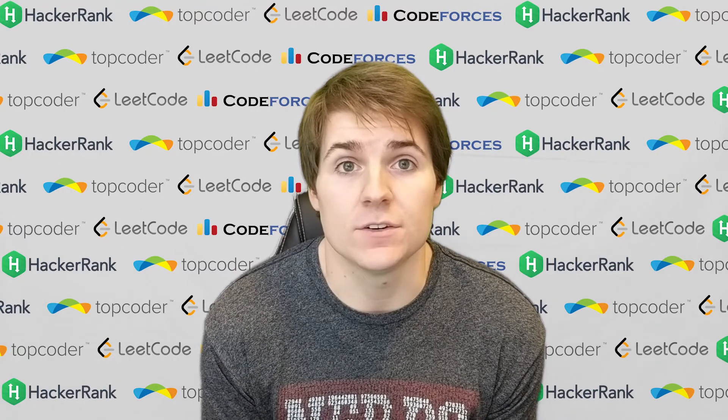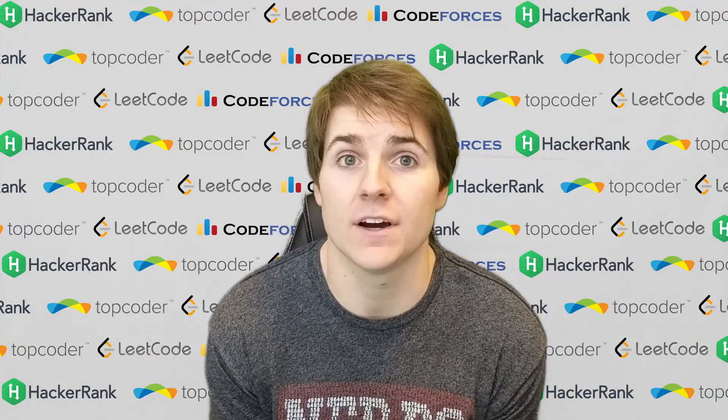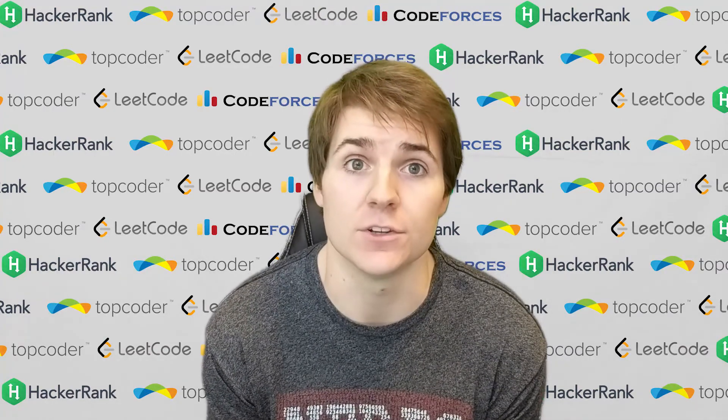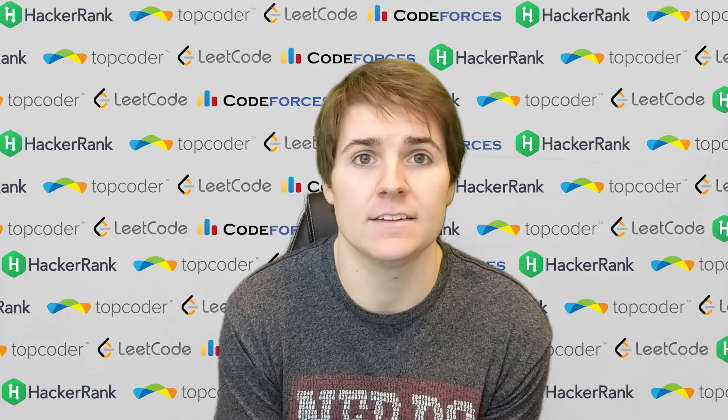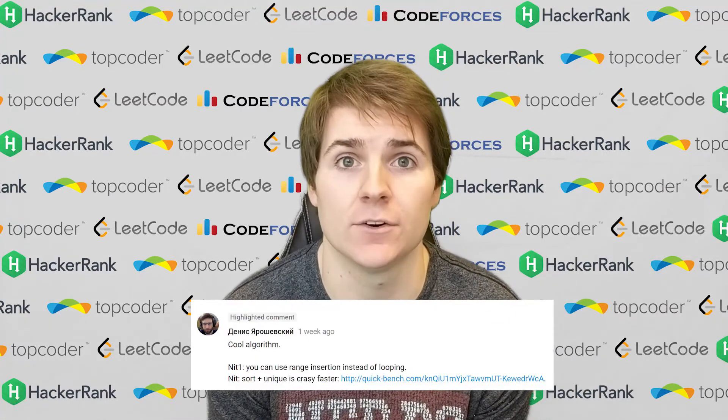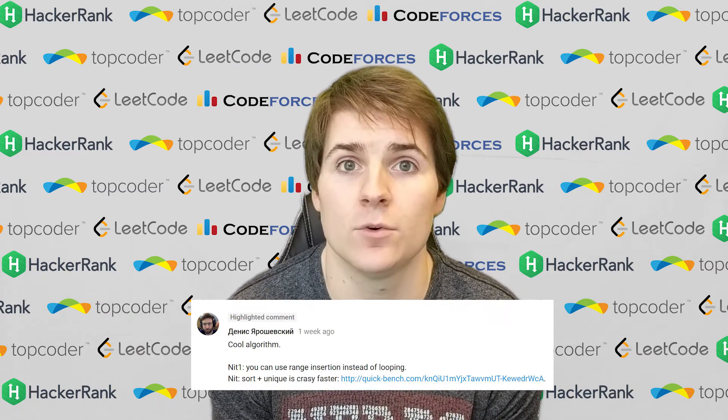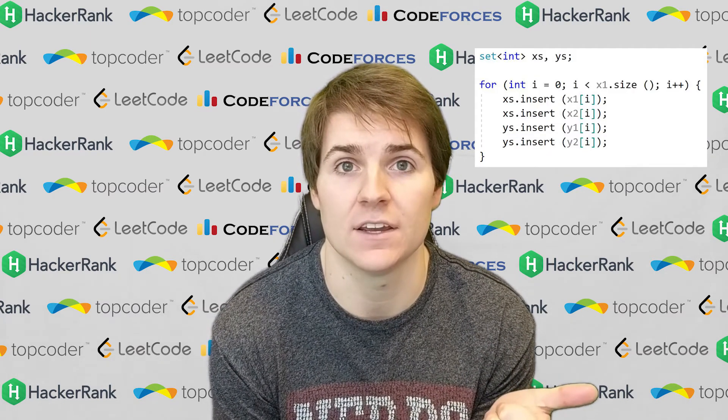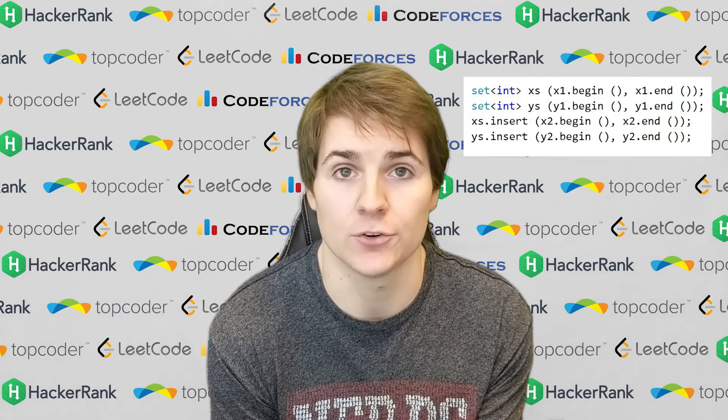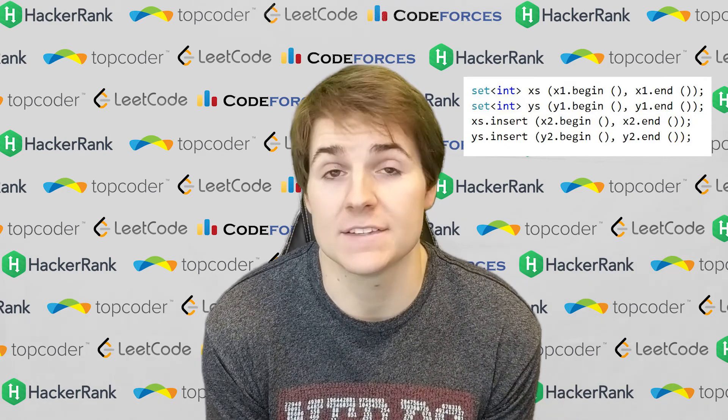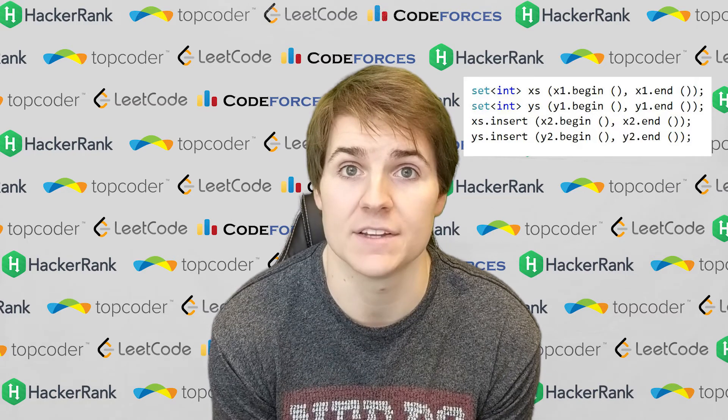The second thing I wanted to mention was a comment that got posted, and I'm going to try and do this more going forward whenever a comment is posted that I think is really useful. There was a comment posted by Genius, and he pointed out that in one of my videos, TopCoder SRM729 Problem 2, I was using a for loop to construct a set, and I could have been using range insertion and also range constructor. So that's a great point. It would have shortened my code by three lines, and also the more STL, the better.